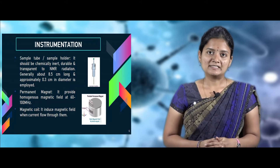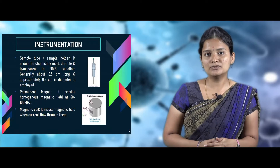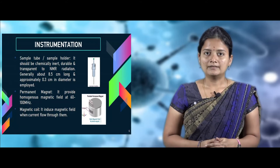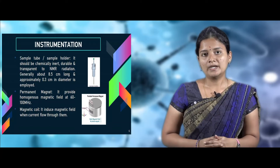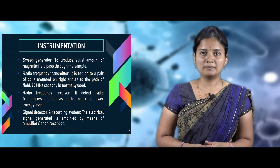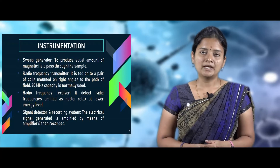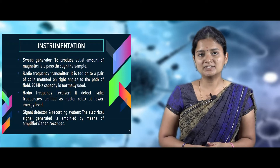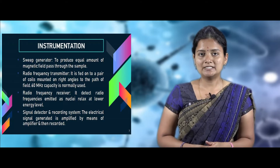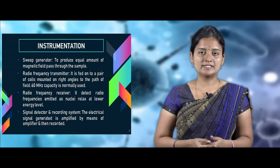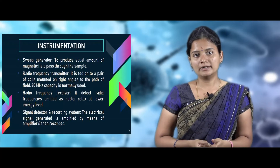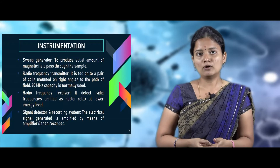The permanent magnet helps to produce a magnetic field at the frequency range of 60 to 100 MHz. The magnetic coil induces a magnetic field when current is passed through it. The sweep generator produces an equal amount of magnetic field across the sample surface. The radio frequency transmitter transmits radio frequency to a pair of coils at approximately 80 MHz. The radio frequency receiver receives frequencies emitted by nuclei at the lower energy level. The signal recorder, the final component, amplifies all recorded signals.